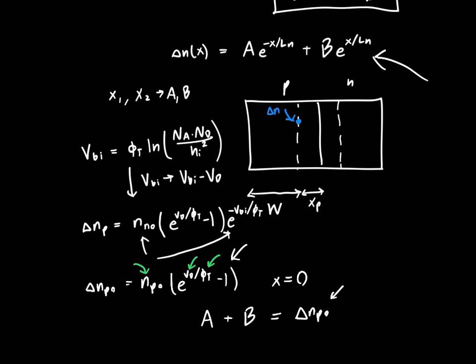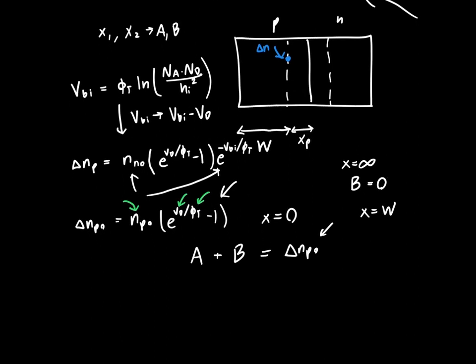Now the second boundary condition we have is a little more difficult to come by, because previously we said that we just plugged in x is equal to infinity. And then we inferred, well, B must be equal to zero, but we can't do that here because we have a finite length of diode. So we need to plug in x is equal to W. And when we do that, we see that we have a times e to the minus W over LN plus B e to the W over LN equals what? What should be here?